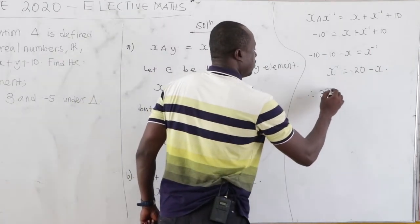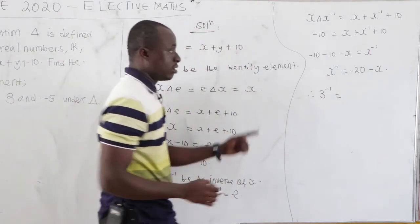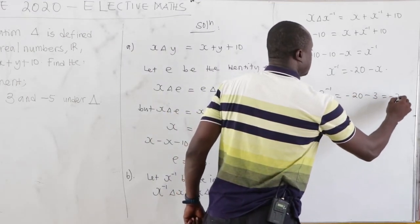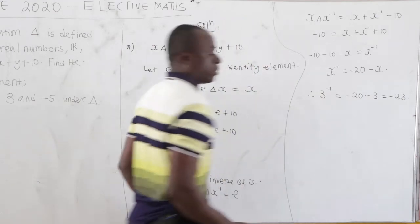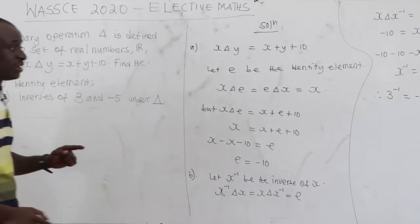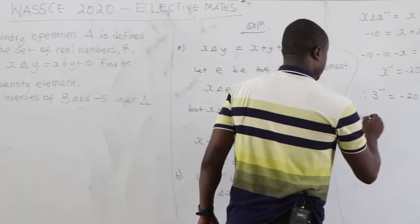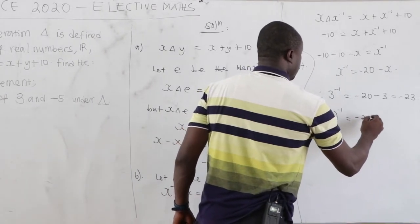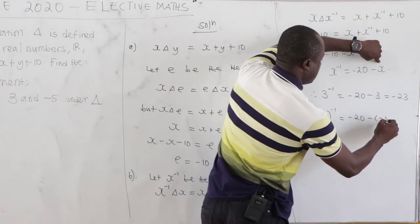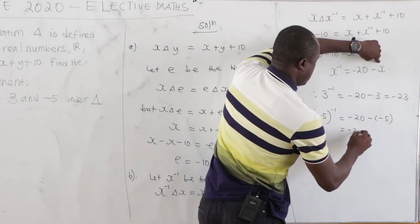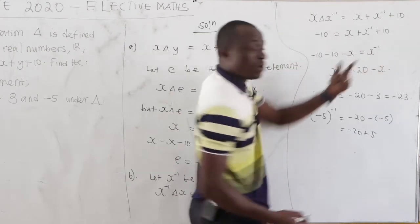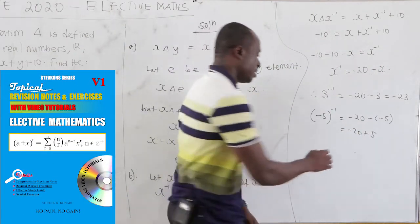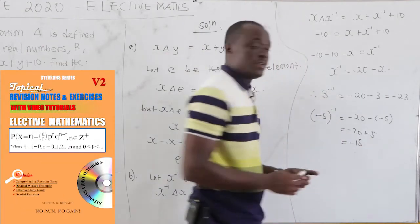Therefore, 3-inverse: when x is 3, that is negative 20 minus 3, which is negative 23. The next one is negative 5-inverse: that is negative 20 minus negative 5, which becomes negative 20 plus 5 — because negative times negative is positive — and this equals negative 15. That is very trivial.